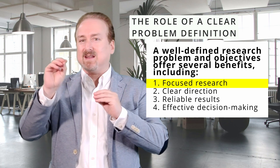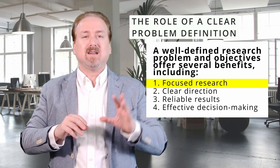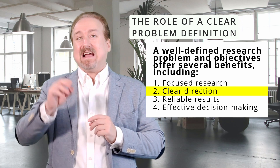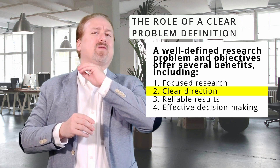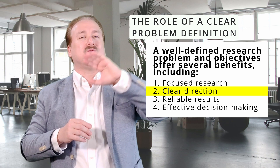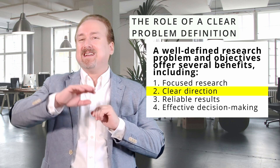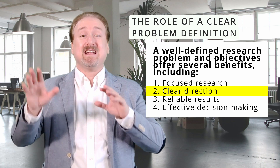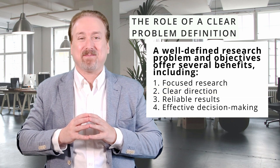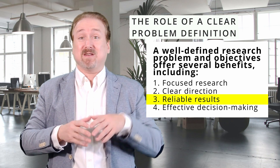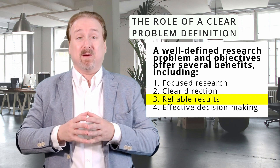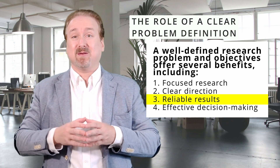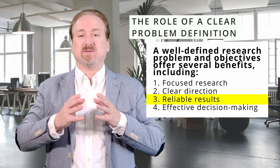Clear direction — a clear problem definition provides a roadmap for the research process, guiding the selection of research methods, data collection techniques, and sampling strategies. It also provides reliable results, as a well-defined research problem helps ensure that research findings are accurate, reliable, and applicable to the issues at hand.